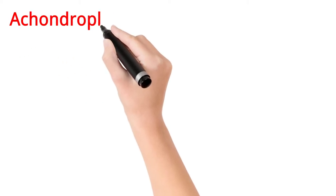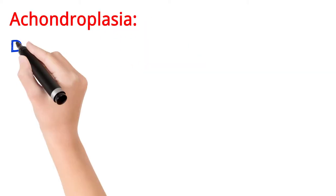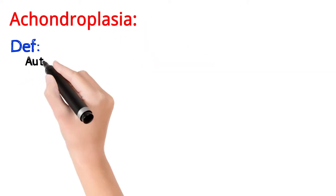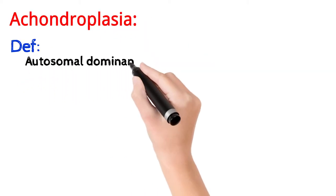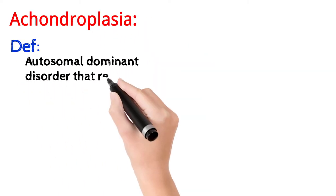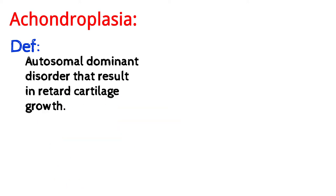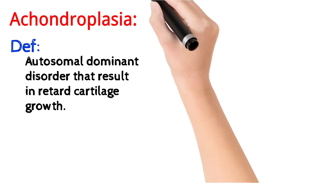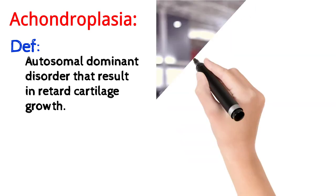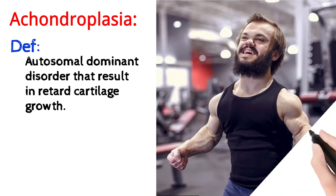Assalamu alaikum friends, today I'm going to talk about Achondroplasia. Achondroplasia is actually an autosomal dominant disorder which results in abnormal cartilage growth. It is a disorder in which cartilage growth becomes inhibited, as you can see in the picture.